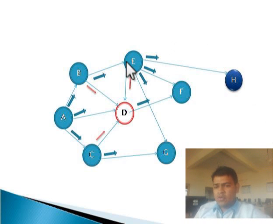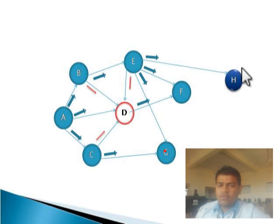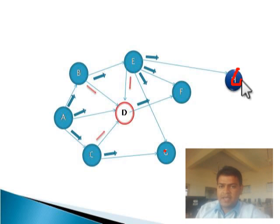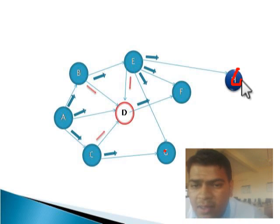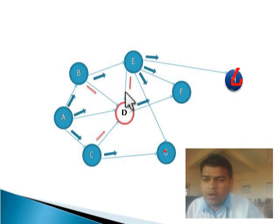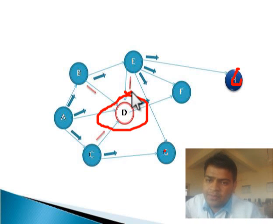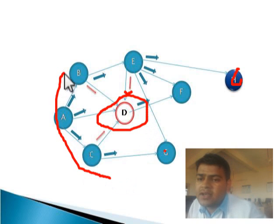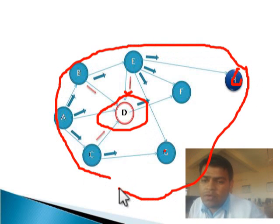In this figure, node E sends the package to its neighbors F and G. H is the last node in the network, so E passes the package to H. This shows that every node receives the package. D has more than one duplicate. This is an example of flooding, and flooding is the best way to share information in networking.